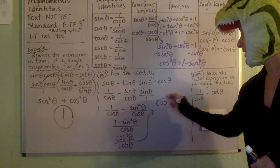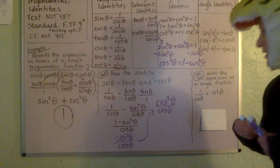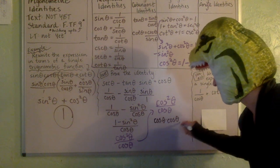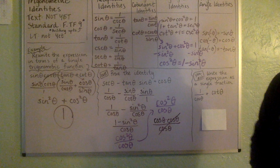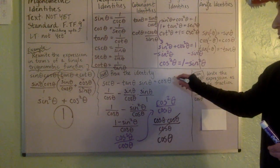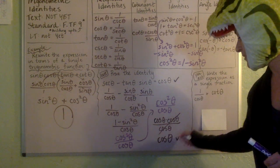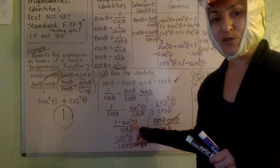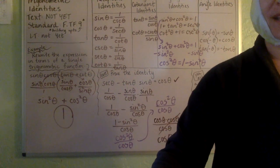We now have cosine squared theta over cosine. Cosine squared means there are two cosine thetas, so one on top cancels with one on the bottom, leaving us with just one cosine. Check out what we were trying to prove — this checks out, and we've proved it. We made a bunch of substitutions to show that the left side is in fact the same as the right side.